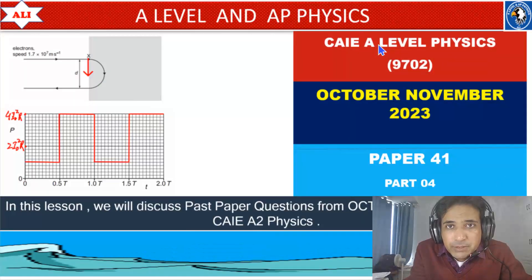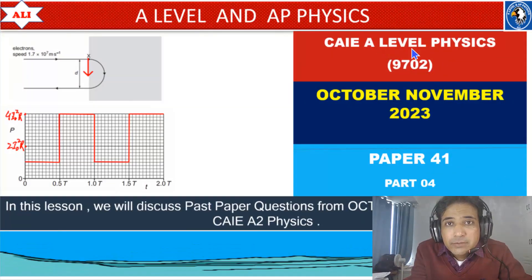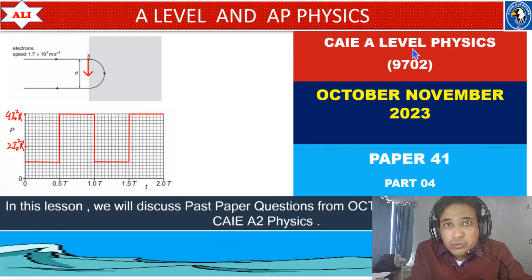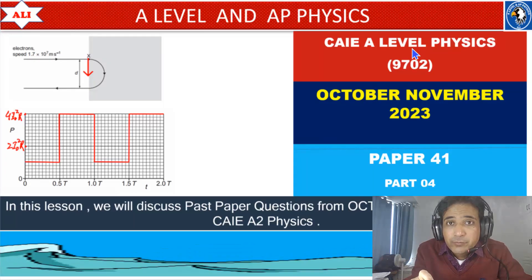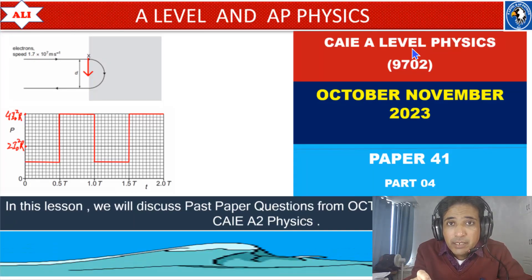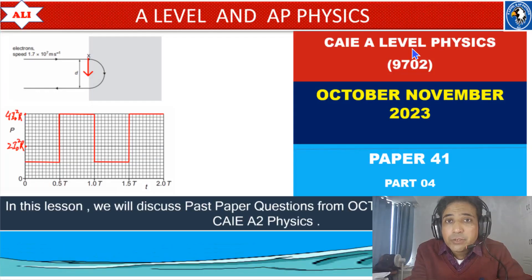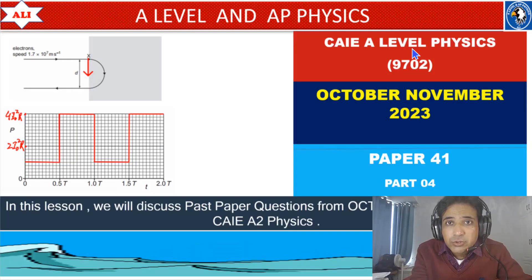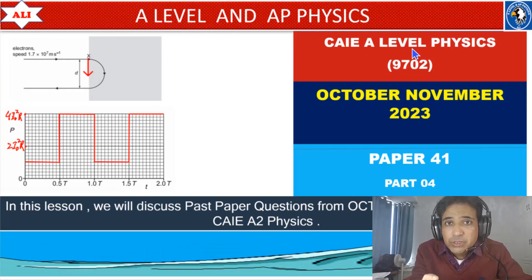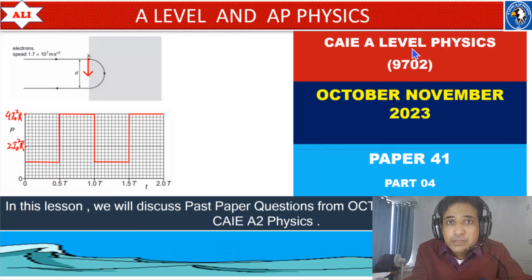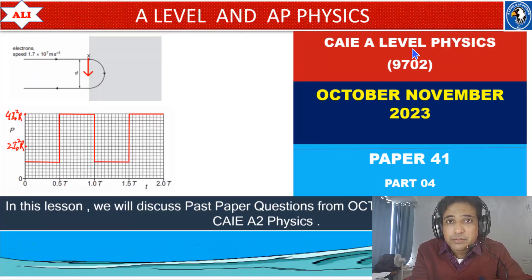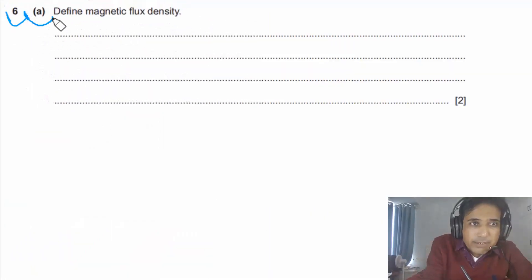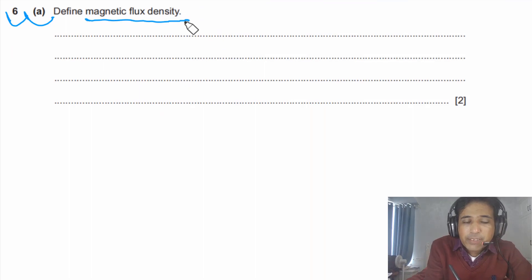Welcome to A-level and AP Physics. In today's lesson we will discuss past paper questions from October/November 2023, Paper 4 Variant 1. We will focus on electromagnetism and alternating current. As always, we will discuss these questions in detail so you can improve your conceptual understanding of physics and have a better understanding of exam questions. Let's study together and improve together. Question 6, part a: define magnetic flux density.